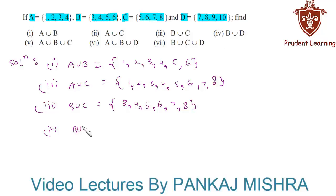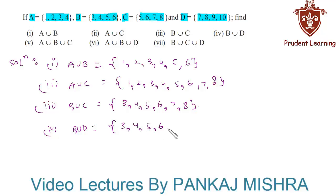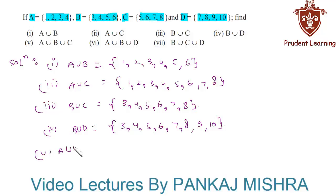In our next section we have to find B union D, that is the set containing all the elements that are present in B or in D. This is equal to {3, 4, 5, 6, 7, 8, 9, 10}.